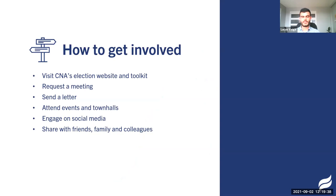We'll now talk about how you can get involved more specifically. I'll walk through CNA's website and toolkit and talk about ways you can get involved. In summary, some high-level ways you can get engaged: go to our website and check out our tools and information, request a meeting with a federal candidate, send a letter, attend events and town halls — during this election we're seeing more virtual events and town halls — engage on social media, and share with your friends, family, and colleagues the initiatives CNA is putting forward.